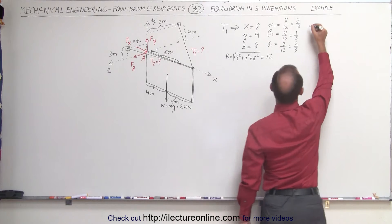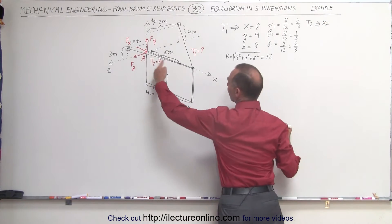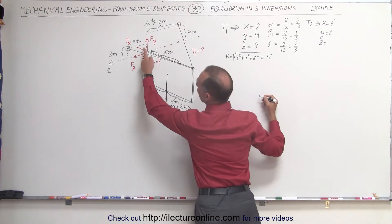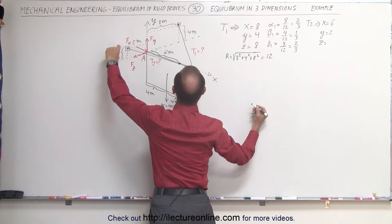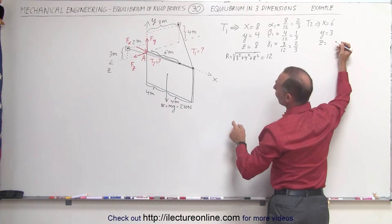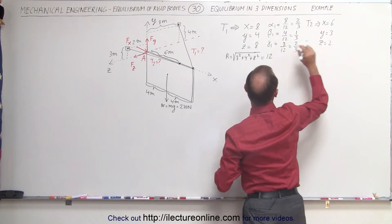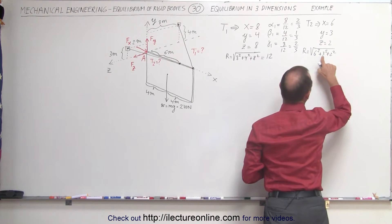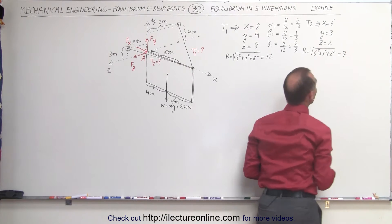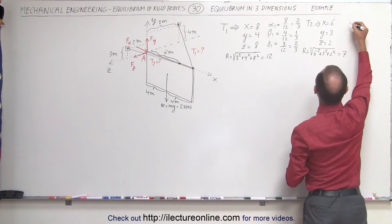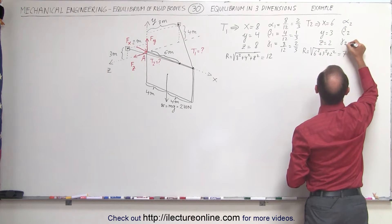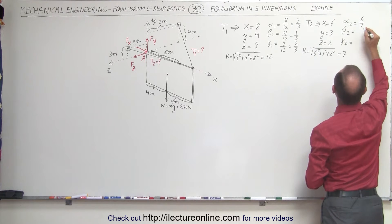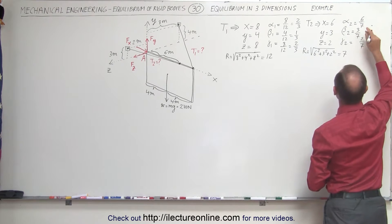Now let's find the direction cosines for the second cable, T2. In the x direction that's 6 meters, in the y direction it's 3 meters, and in the z direction it's 2 meters. The length of that cable is the square root of 6 squared plus 3 squared plus 2 squared: 36 plus 9 plus 4 equals 49, and the square root of 49 is 7. So the direction cosines for cable two are: alpha₂ = 6/7, beta₂ = 3/7, and gamma₂ = 2/7.